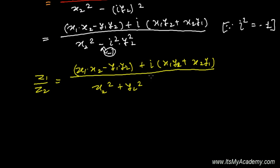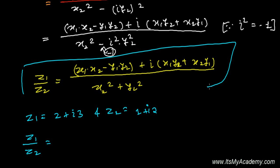Now let's do a very simple example based on this. Let's say I have z1 = 2 + 3i and z2 = 1 + 2i. Now I'm going to find out z1 divided by z2.